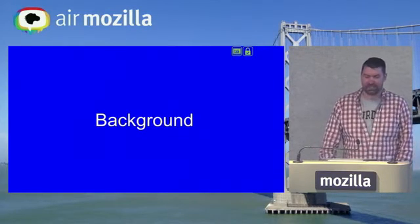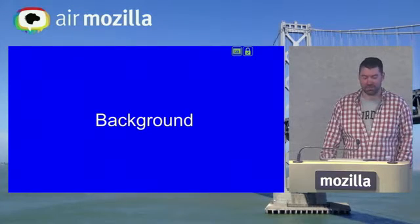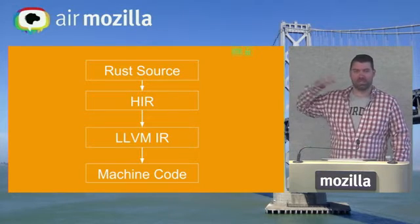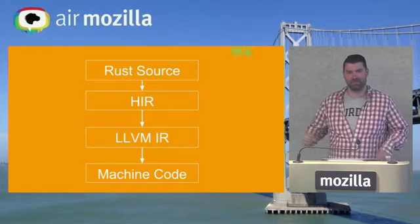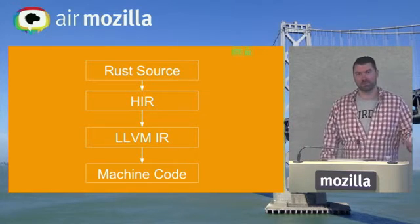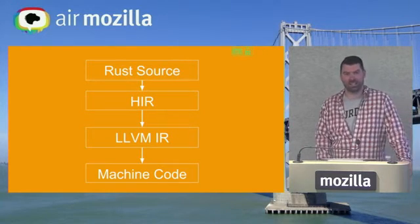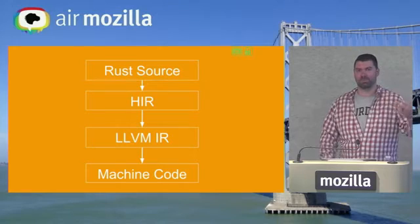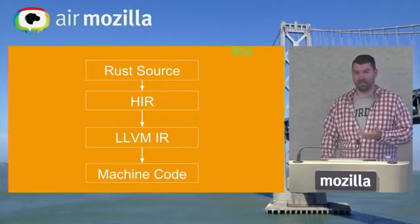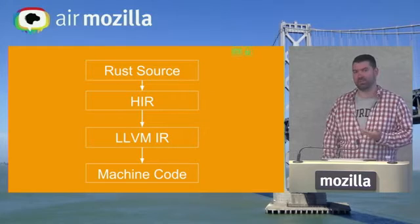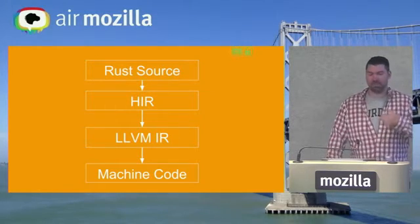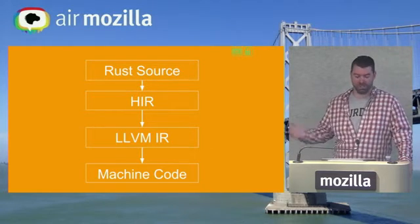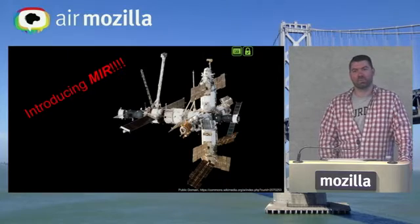I need to do some background before I jump into what I did this summer, but it'll be pretty brief and high level. We start from the Rust source — basically a high-level systems programming language. The compiler doesn't just compile Rust line by line into machine code; it goes through intermediate steps: Rust source to high-level intermediate representation, to LLVM intermediate representation, and then to machine code. This is pretty much how most compilers for high-level languages work.